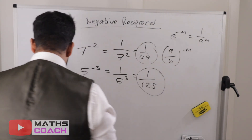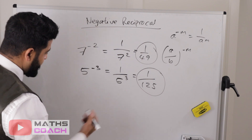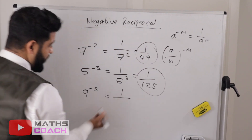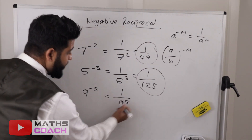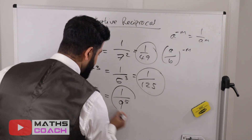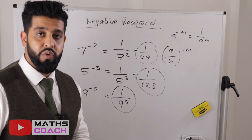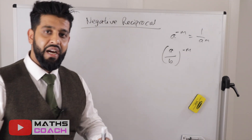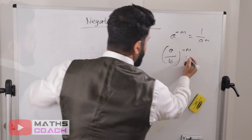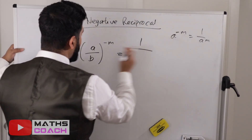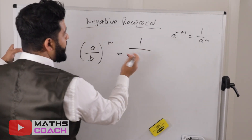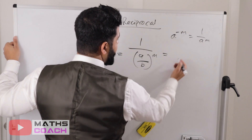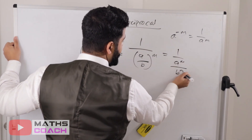Let's try 9 to the power of minus 5. The negative means 1 over, so it becomes 1 over 9 to the power of 5. 9 to the power of 5 is a large number so we'll leave it like that — the aim is just to show how the rule is applied. Now for the general rule: a over b to the power of minus m becomes 1 over a over b to the power of m, which expands to 1 over a to the m over b to the m.